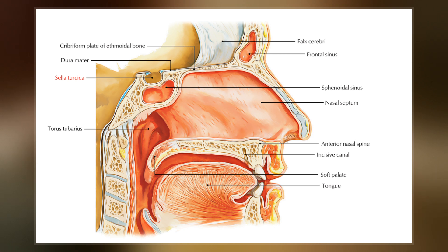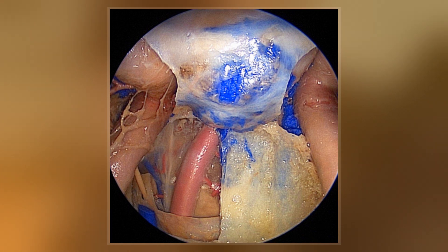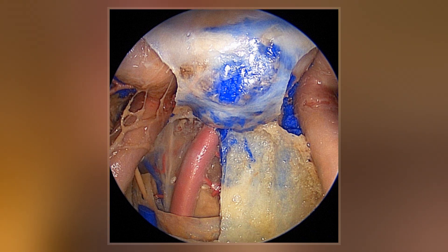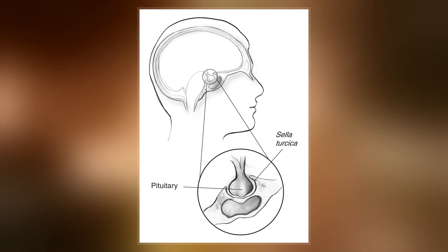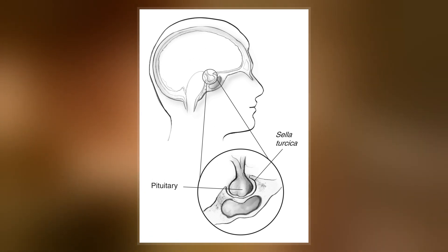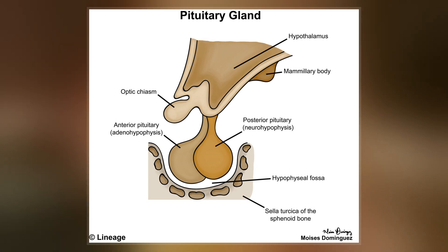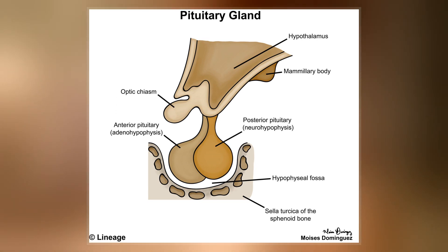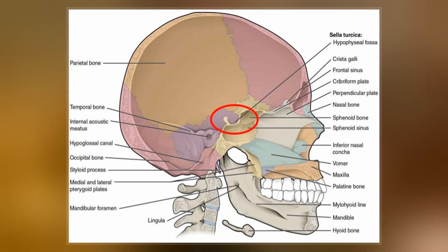The Sella turcica is located in the sphenoid bone behind the chiasmatic groove in the tuberculum sella. It belongs to the middle cranial fossa. The most inferior portion is known as the hypophysal fossa and contains the pituitary gland. In front of the hypophysal fossa is the tuberculum sella. Completing the formation of the saddle posteriorly is the dorsum sella, which is continuous with the clivus inferoposteriorly.